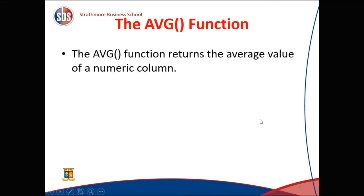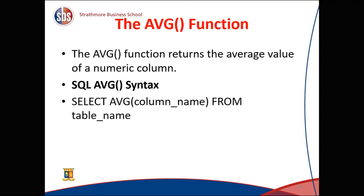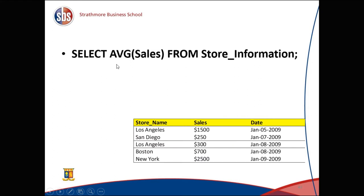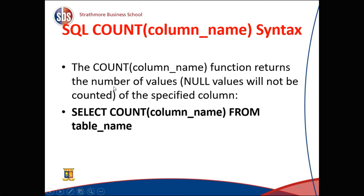The AVG function returns the average value of a numeric column. The syntax is: SELECT AVG(column_name) FROM table_name. So SELECT AVG(sales) FROM store_information will return the average of all the sales values. The COUNT function returns the number of values, excluding null (empty) values.